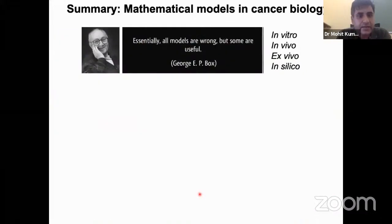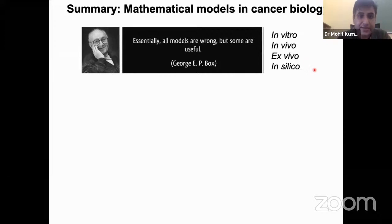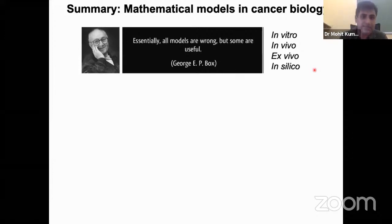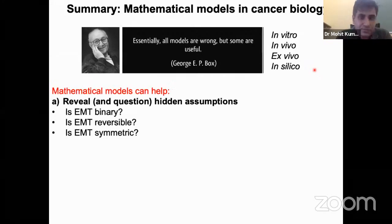I'm sure many of you have heard: all models are wrong, but some are useful. Think about this in a broader sense — in vitro models, in vivo models, ex vivo models — all are models. We use them because they are reasonably accurate replicas of the human system, and the understanding gained helps us move forward. Mathematical models are trying to do the same — just a different toolkit. Each model has its own assumptions, strengths, and limitations, and we should work closely to integrate those strengths.